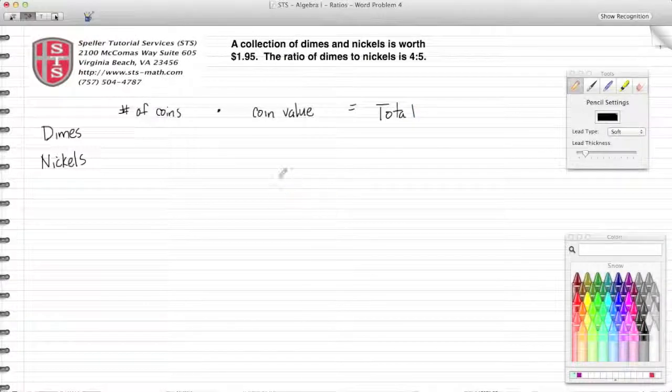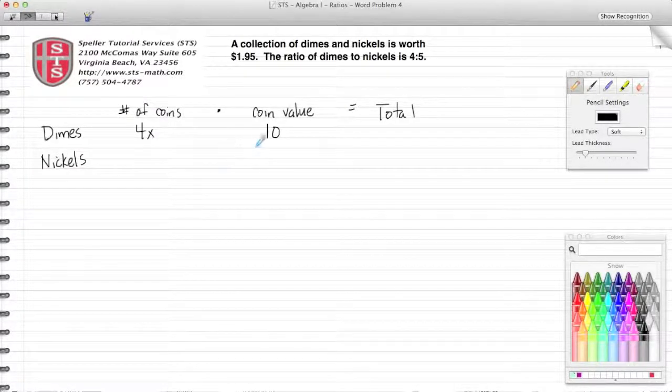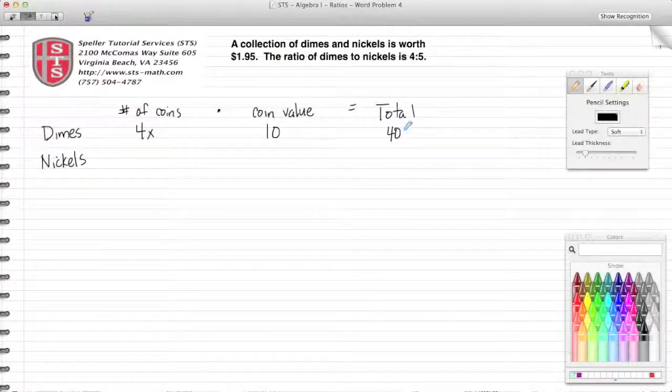Well, we don't know the number of dimes, but we know the ratio is going to be 4x because we're trying to figure out what that number is. The coin value for a dime, we're going to use 10. We're going to stay away from the decimal points because that's going to make it a little more difficult to work with our numbers. But just realize that once we check our answer we have to use the decimals to make sure that we're correct. So 4x times 10 gives us 40x as a total.